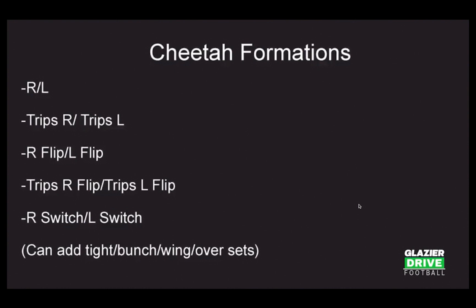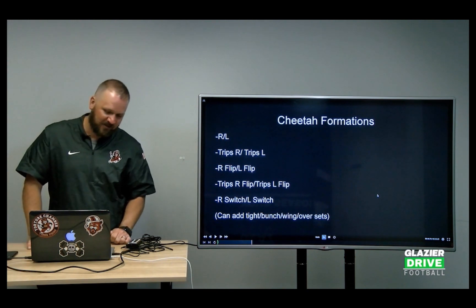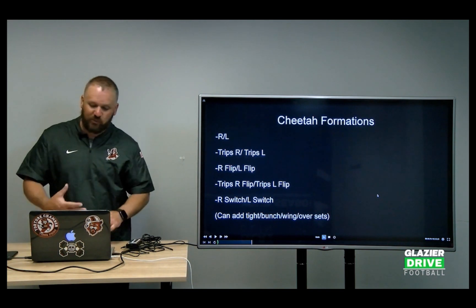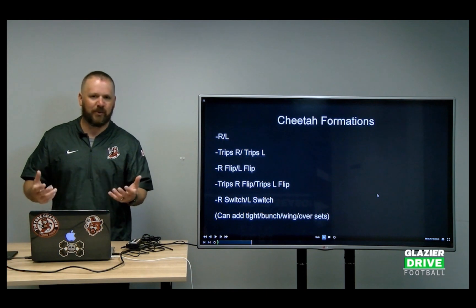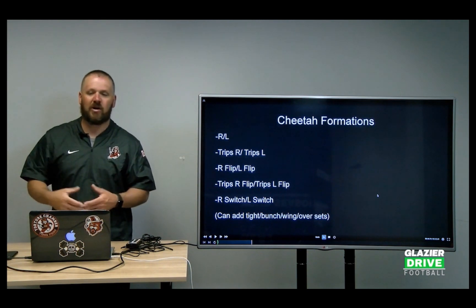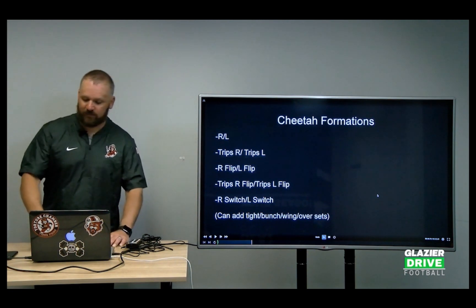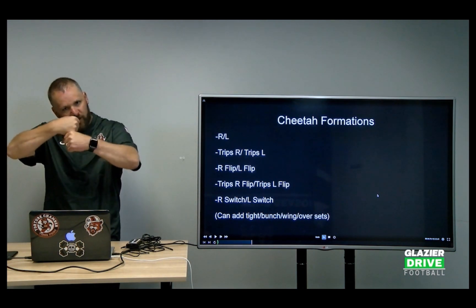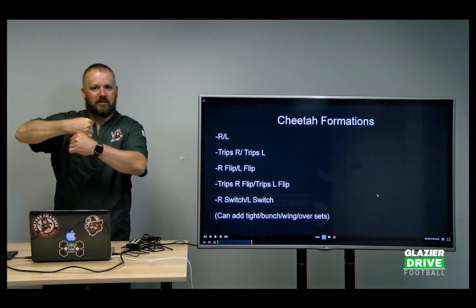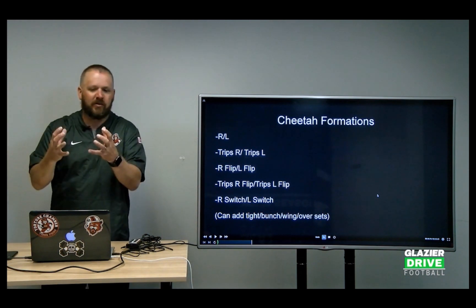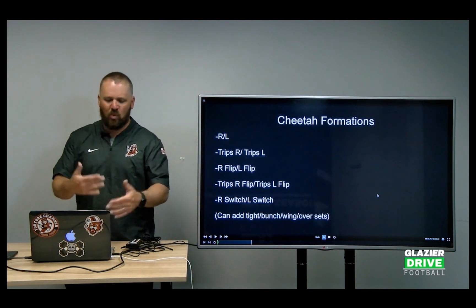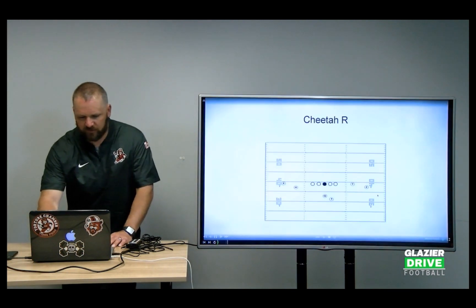When you look at all those formations, it sounds like a lot, but it's really not. The flip and switch are typically things you use during game planning — when you want to get your X receiver with your Z. You can also add things like 'tight' — we'll twist our hand and go 'Cheetah right tight,' which tells them to condense the formation. You can add bunch, wing — all of this stuff once you get your base down.